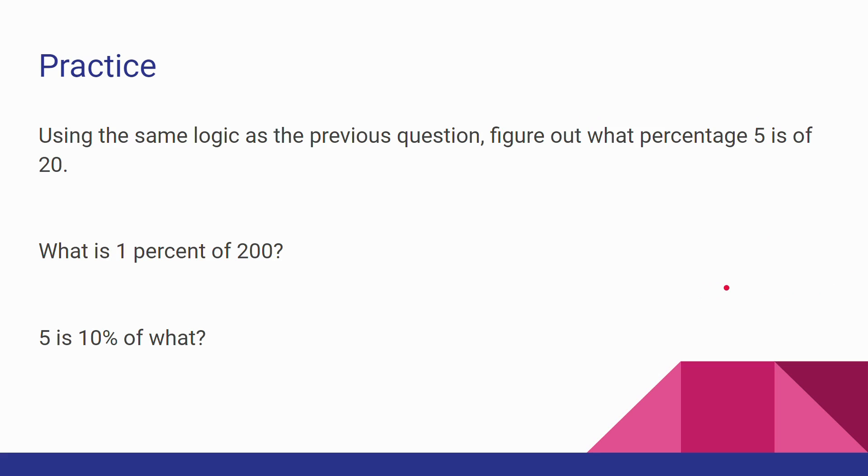If you use the same logic as the previous question, figure out what percentage 5 is of 20. Alright, in this case, the answer would be 25%, because if you do 5 divided by 20, then you come up with 0.25. And so if you turn it into a percent, then it becomes 25%.